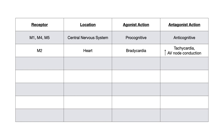The M2 receptor is located in the heart. An agonist at the M2 receptor causes bradycardia, and an antagonist at the M2 receptor causes the opposite — tachycardia — and also increases AV nodal conduction.